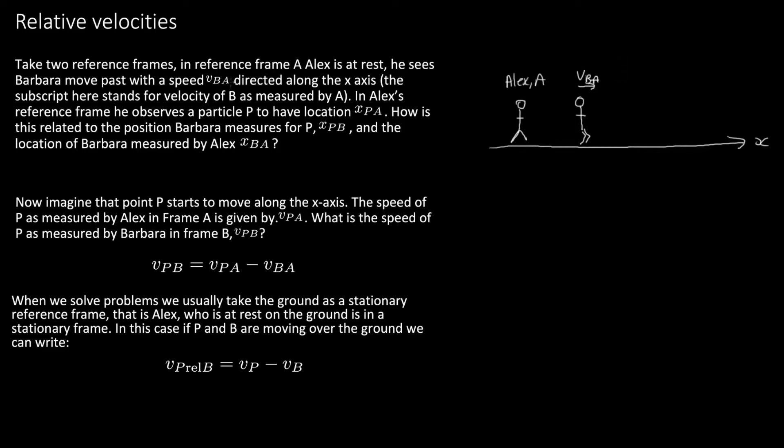The subscript here stands for the velocity of Barbara measured by Alex. Now in Alex's reference frame he observes a particle to have a location xpa. So let's draw a particle, here's our particle p. According to Alex, this distance here is given by xpa, and we're asked how is this related to the position of Barbara measures for p.